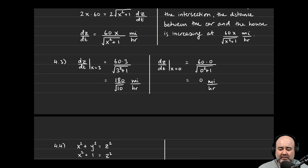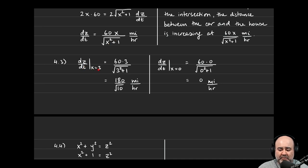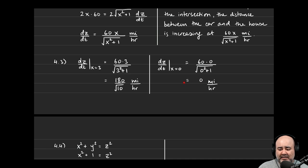Part 4.3 asks us to verify whether this formula makes sense — just a sanity check. Find dz/dt using this formula when the car is 3 miles past the intersection. Plugging in x = 3: 60 times 3 over √(3² + 1) = 180 over √10, which is the same answer we got in part 4.1. We're also asked to find dz/dt at x = 0: 60 times 0 over √1 = 0. At the intersection itself, the distance between the car and the house is not changing at all.